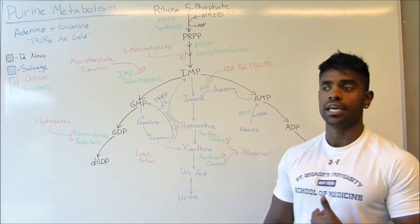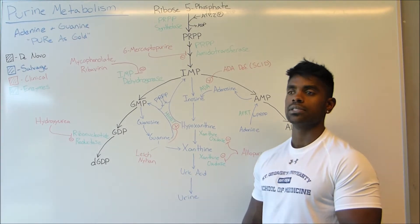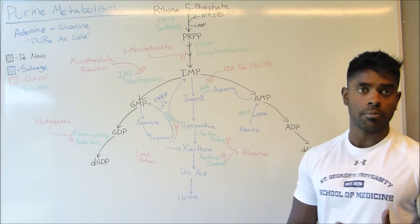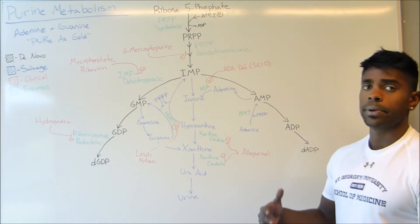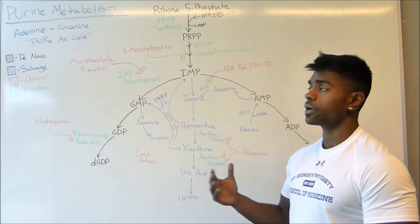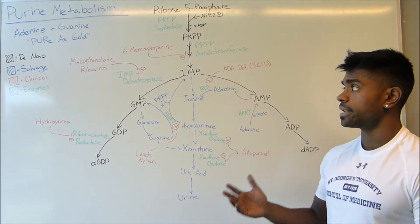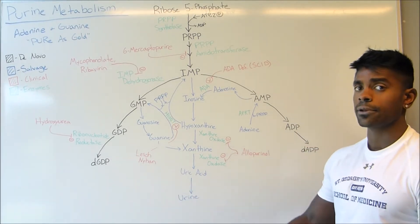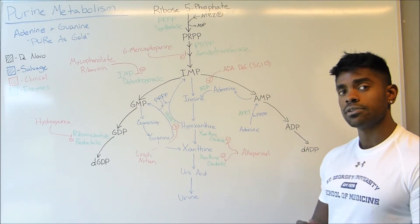The first thing we have to understand is what are the purines. First, a gives us the mnemonic 'pure as gold' — purine for purines, and 'as gold' for adenine and guanine.